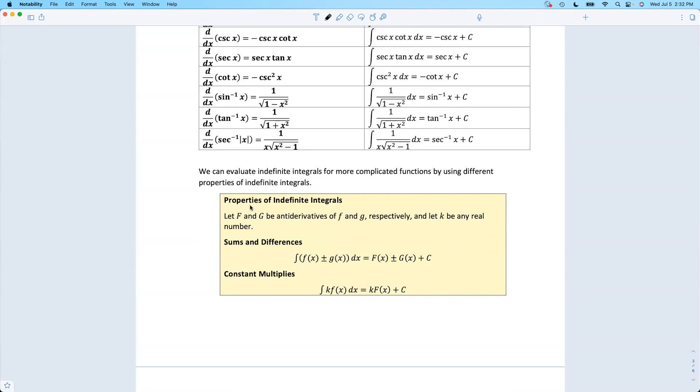When we were taking derivatives, we had product rule. We had quotient rule, chain rule. We do not have equivalent rules going backwards. There is no product rule for antiderivatives. It doesn't exist.